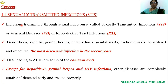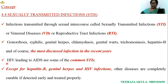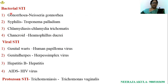Sexually transmitted diseases are also known as sexually transmitted infections, venereal diseases, or reproductive tract infections. Examples include: gonorrhea, syphilis, genital herpes, chlamydia, genital warts, trichomoniasis, hepatitis B, and HIV leading to AIDS — one of the most discussed infections in recent years. Except hepatitis B, genital herpes, and HIV infections, other STIs if identified early can be cured completely.